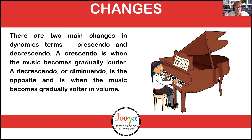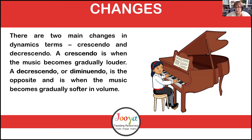Now changes - there are two main changes in dynamics itself: a crescendo is when the music gets louder, and a decrescendo or diminuendo is the opposite, when the music becomes gradually softer. But changes don't only include dynamics - it can be changes in techniques, changes in tempo, changes in any way, shape, or form. What sort of changes are happening in the music? If you're getting this sort of question, there should be lots of changes happening so there's enough to discuss in your response.